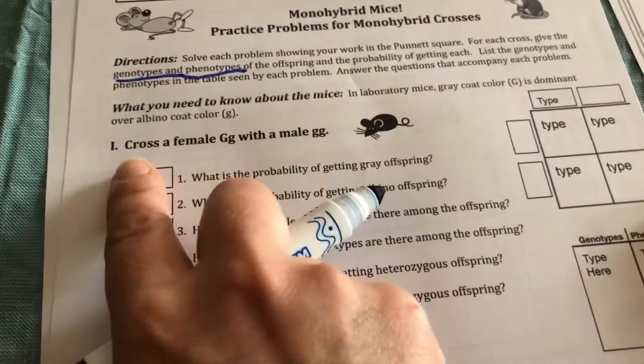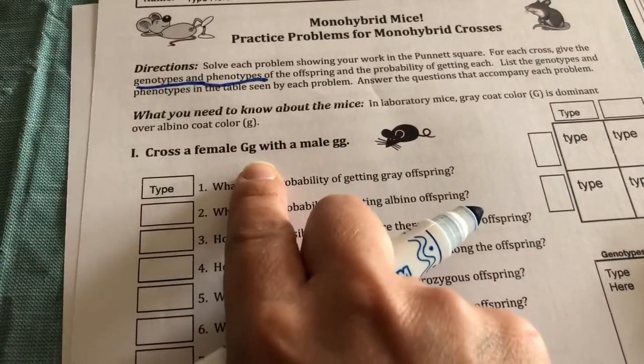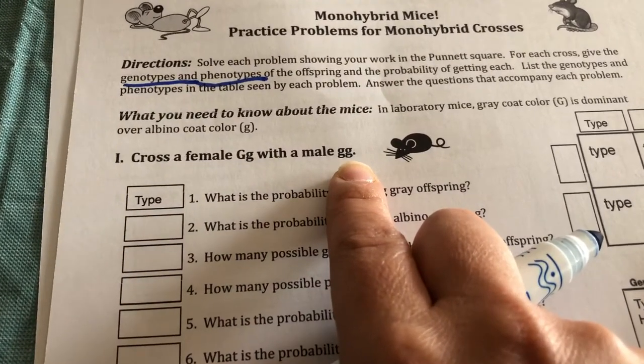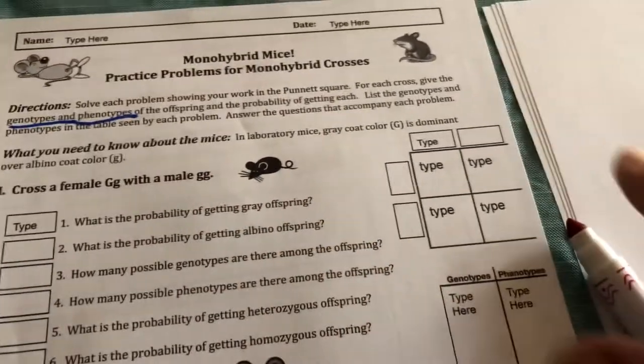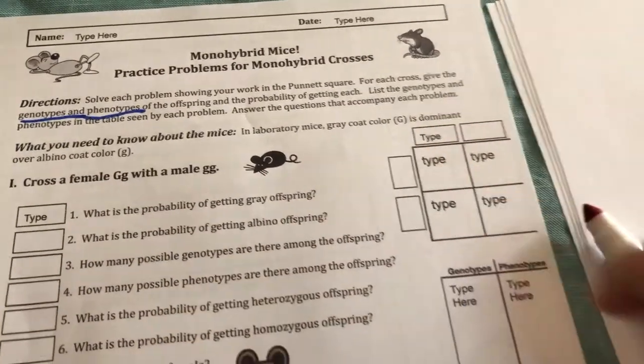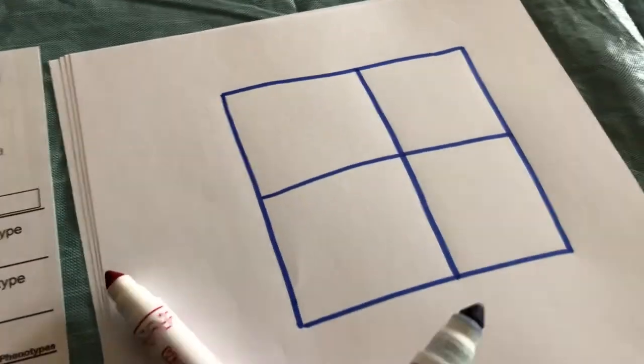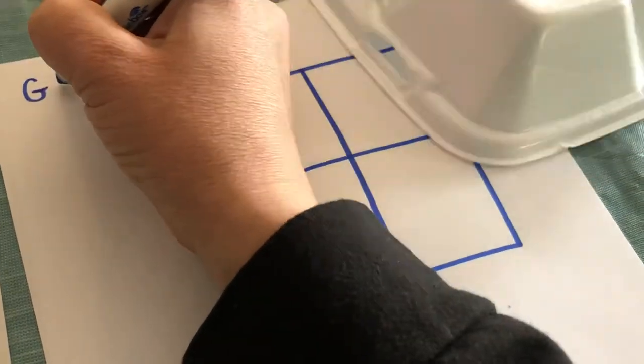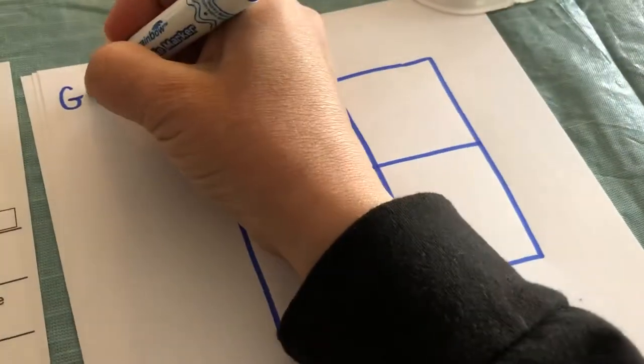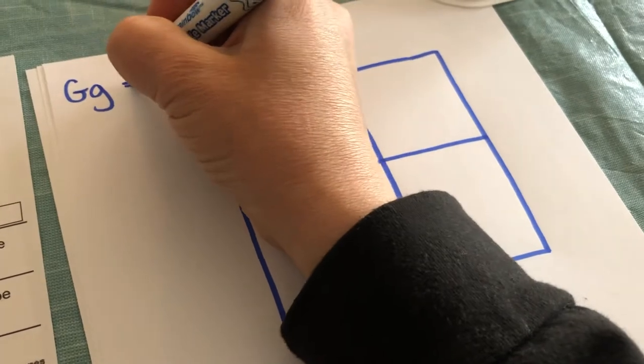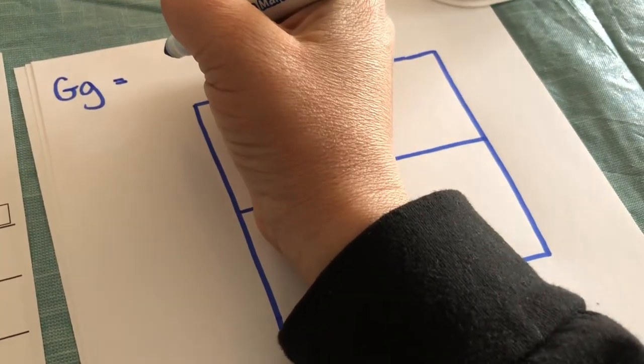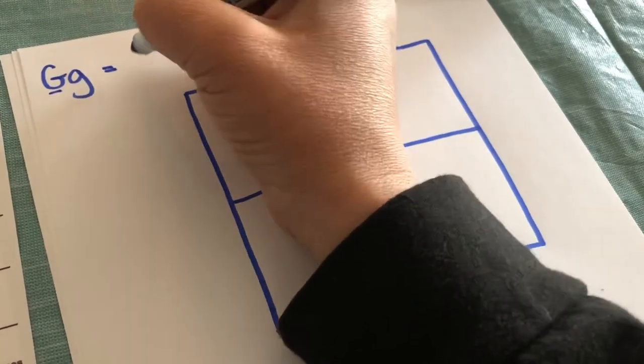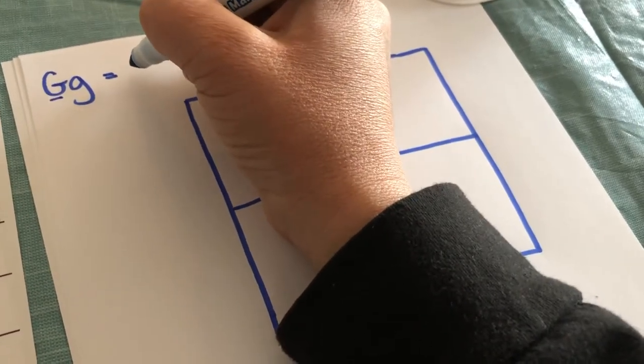Here's our first problem. We're going to cross a female capital G lowercase g with a male lowercase lowercase. Now I'm not going to write in these little boxes. I made it a little bit bigger over here. Capital G, lowercase g. There's a capital and a capital is gray coat. So if you have one capital, automatically this mouse has gray fur.